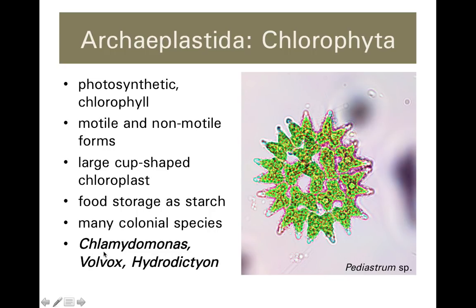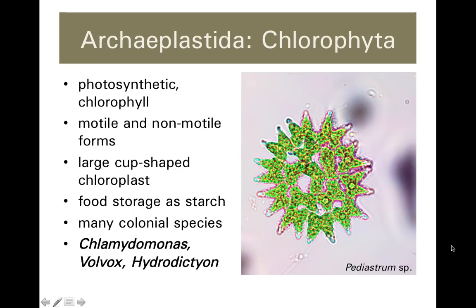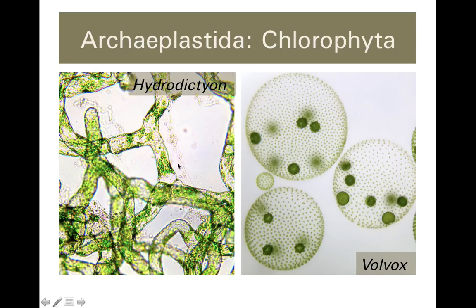Chlamydomonas, Volvox, and Hydrodiction are three commonly observed representatives of green algae that you saw in lab, along with Pediastrum, a colonial form with little bowtie-shaped components. Hydrodiction is the water net, another colonial form. In all of these you can see a pattern where a simple cell shape is repeated many times: the bowtie shape repeats to give colonial Pediastrum, a somewhat different shape repeats to form Hydrodiction's net, and Volvox's cellular shape is repeated many times. These are all colonial green algae.